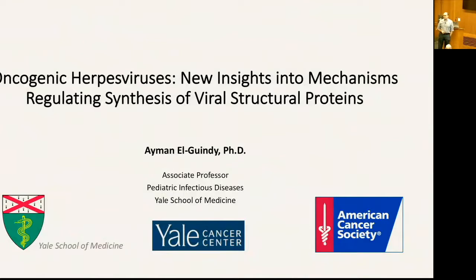My lab is basically interested in this recently discovered complex, which is a transcription pre-initiation complex that regulates transcription of a specific class of viral genes. Through understanding this complex, we can actually inhibit production of Epstein-Barr virus — new virus particles of Epstein-Barr virus — which is an oncogenic herpes virus. These findings are also applicable to another herpes virus, Kaposi sarcoma herpes virus, which has the same complex.